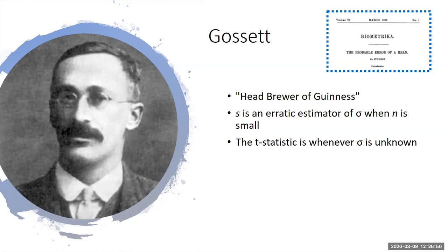When we pretend to know s and map it onto the z distribution, we're being presumptive — the z distribution really requires that you know sigma. If you don't know sigma, you shouldn't be using the z distribution. So Gossett invented the t-statistic, and we call it Student's t. The t-statistic is calculated pretty much the same way as the z-statistic; however, we compare it to a distribution of t scores rather than z scores using Gossett's own t-table.